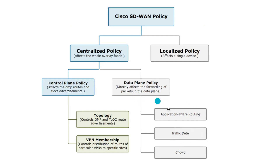Under centralized policy, there are two types: control plane policy and data plane policy. Under control plane, you have topology and VPN membership. In data plane, you have the same things you'd configure on a regular Cisco router — traffic policies, NetFlow, and application-aware routing. Centralized policy can affect the whole overlay fabric, but you also have a customized option where you can impact only specific sites.